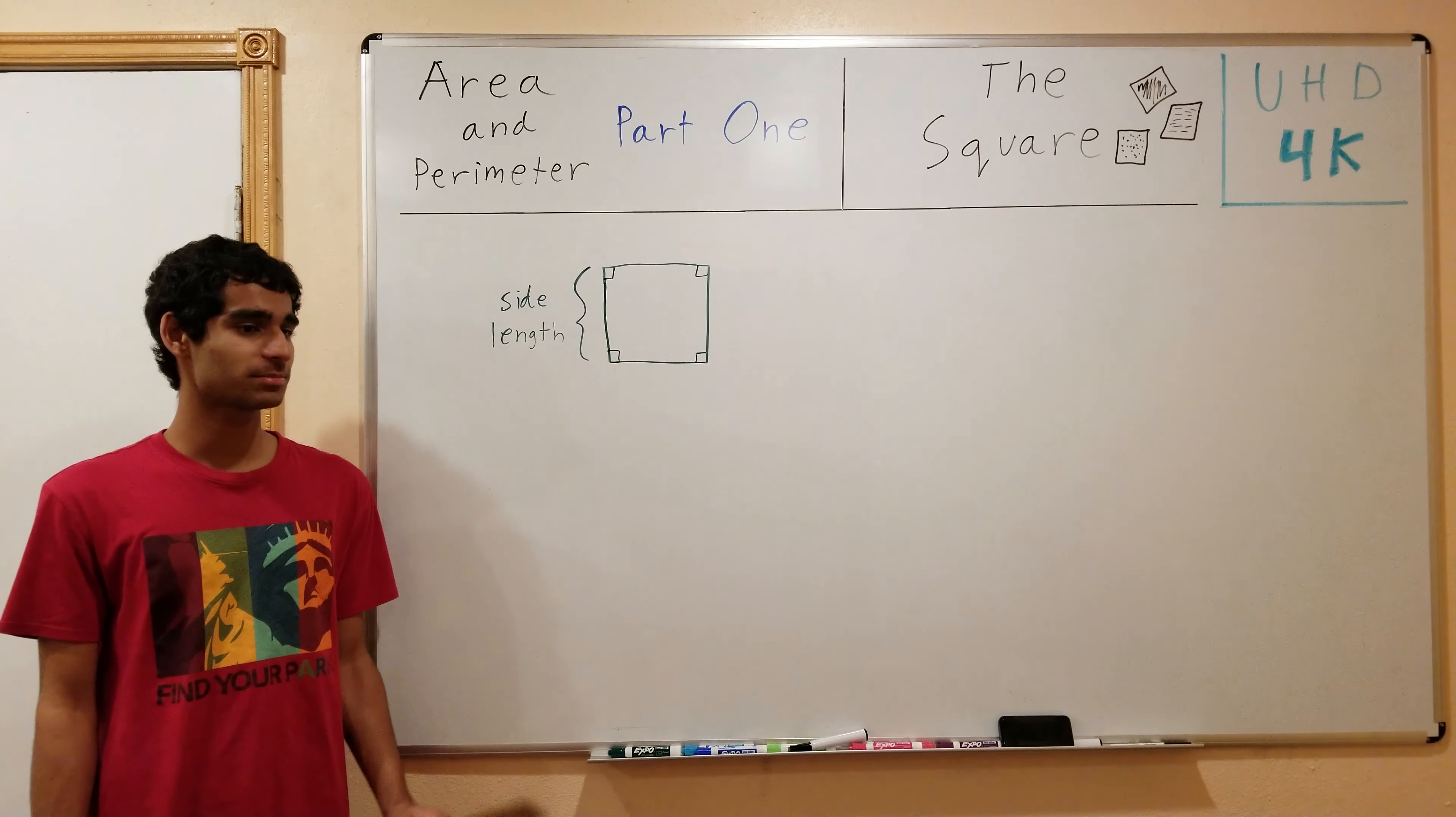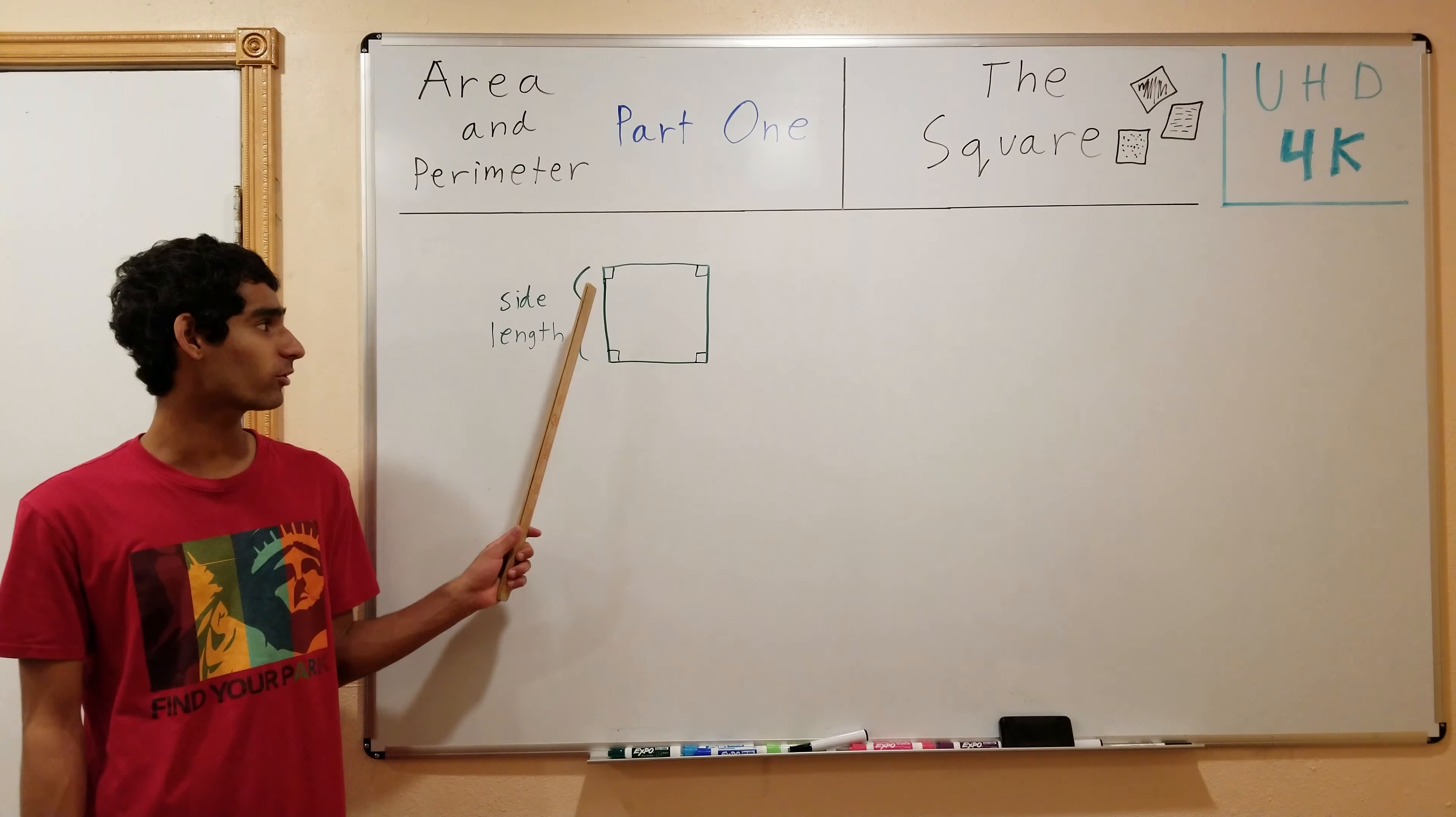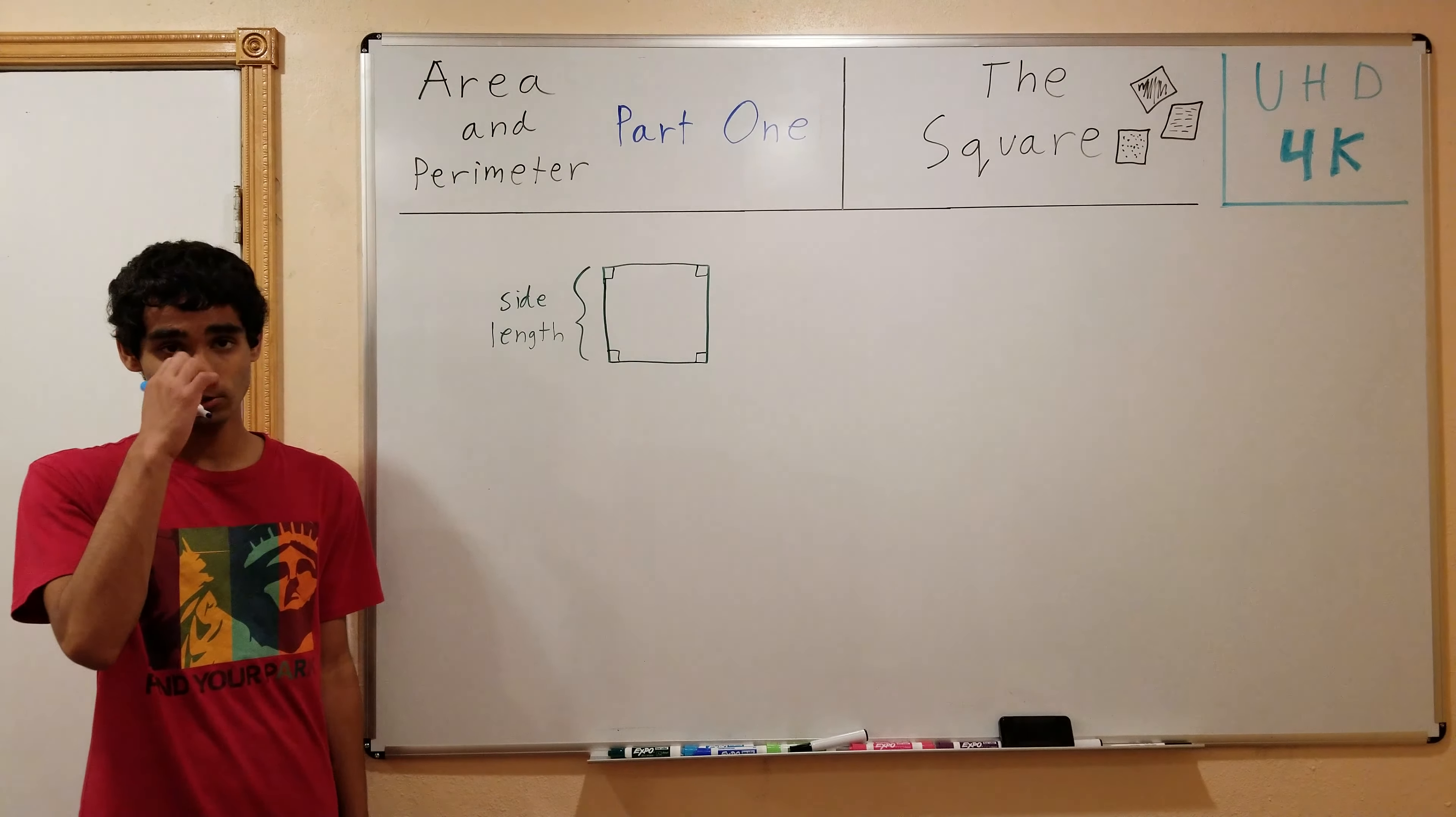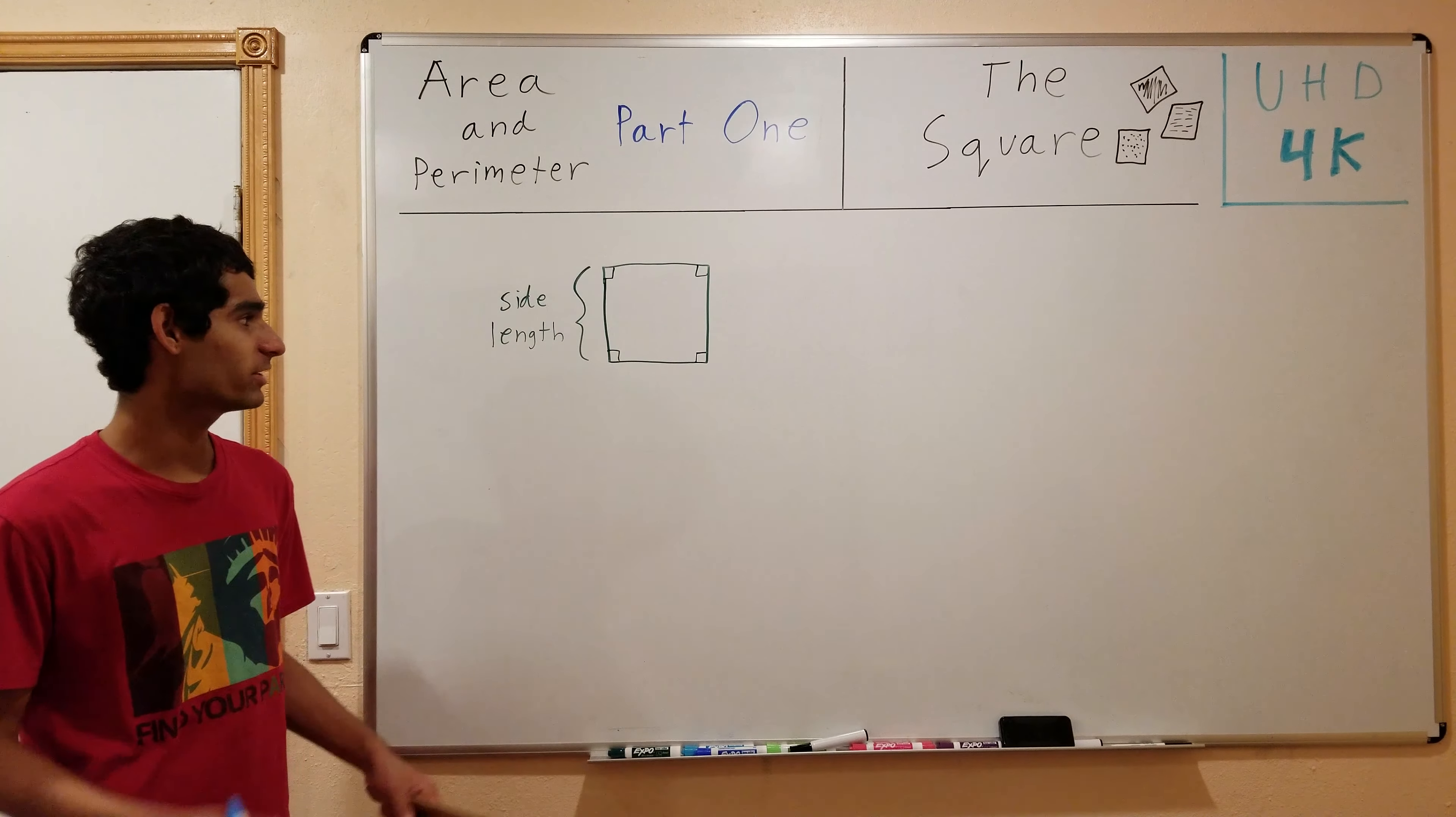So a square is quite simply the simplest geometric shape out there. It consists of four sides all of equal lengths. All four of these angles are also equal. So really simple, simplest shape out there. You probably see thousands of them every day.